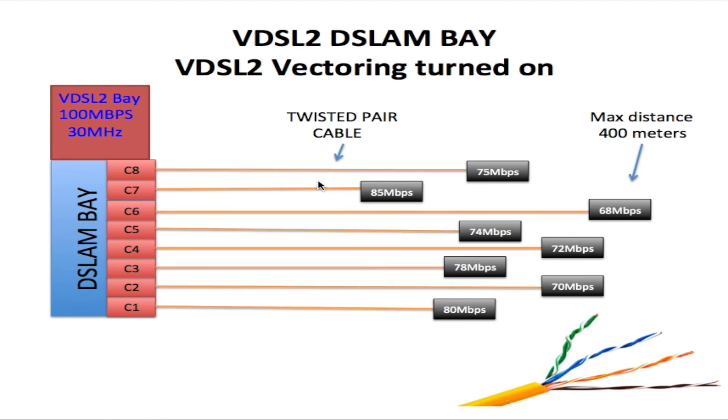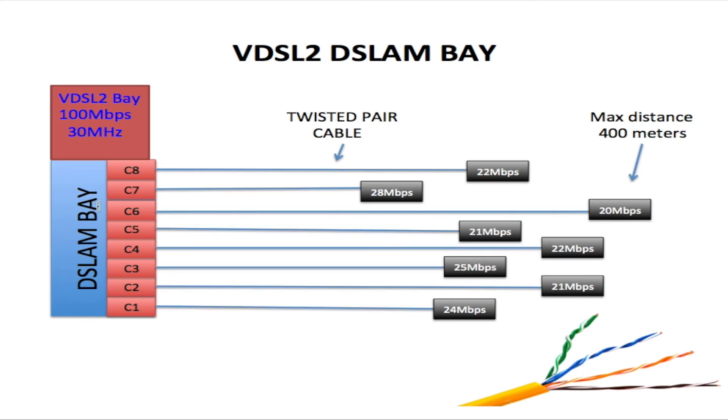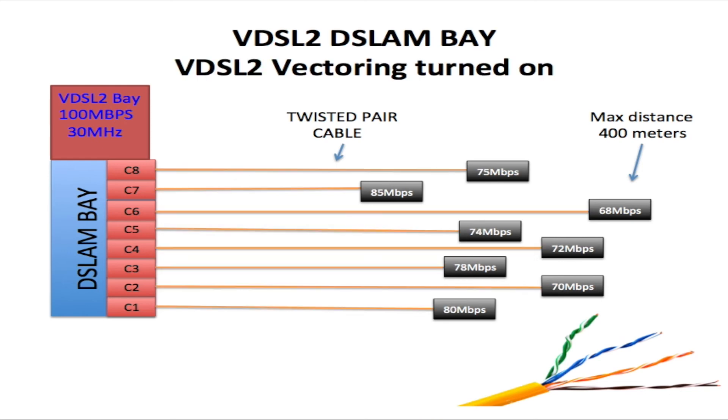Now, as you see here, we're using VDSL2 vectoring on this particular line and the speeds have increased. On the last slide, the speeds were 22 megabits per second with all the crosstalk we're having on the line here, with no VDSL2 vectoring applied. On this line here, we're getting 75 megabits per second with VDSL2 vectoring applied.